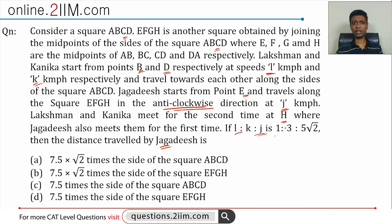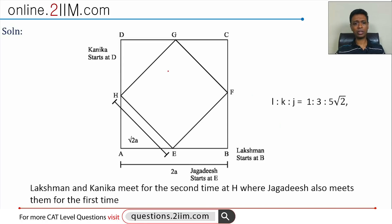I'm going to draw this diagram ABCD. Kanika starts at D, Lakshman starts at B. They meet for the second time at H. For the time being I'm going to forget Jagdish, simplifying this question. I'm going to assume the side of the larger square is 2A, so this would be A, this would be A, so this is √2A. The side of the smaller square is √2A. All of these are A.